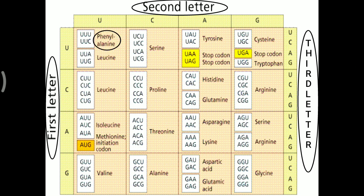For example, UUU and UUC — where the third letter is C — both code for phenylalanine. In this way, a total of 64 genetic codons can be generated, coding for the 20 different amino acids. We have seen that 61 genetic codons code for amino acids.